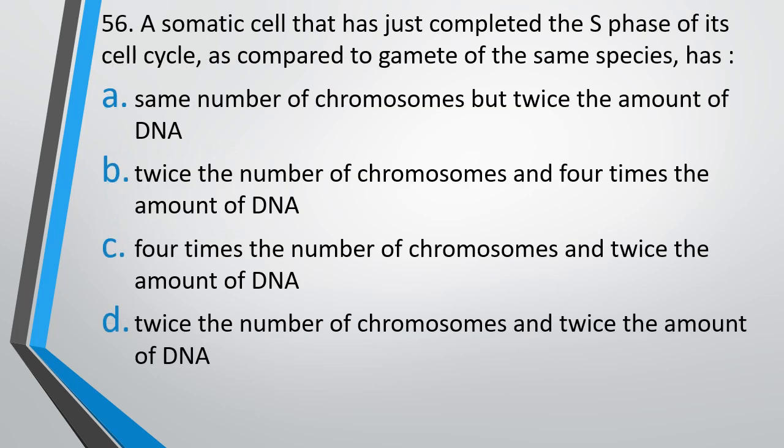Question number 56. A somatic cell that has just completed the S phase of its cell cycle as compared to gamete of the same species has: same number of chromosomes but twice the amount of DNA, twice the number of chromosomes and four times the amount of DNA, four times the number of chromosomes and twice the amount of DNA, or twice the number of chromosomes and twice the amount of DNA? Correct answer is Option B - twice the number of chromosomes and four times the amount of DNA.